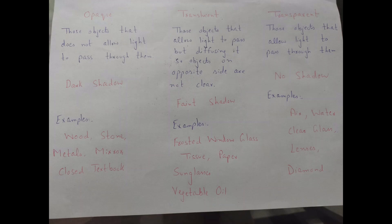Translucent objects are those that allow only some light to pass through — not all of it, but some. Due to this, there is still a shadow formed, but a very faint shadow. If we compare opaque and translucent objects, both produce a shadow, but the shadow from translucent objects is very, very faint. Examples of translucent objects are wax paper, frosted glass, and tissue paper.